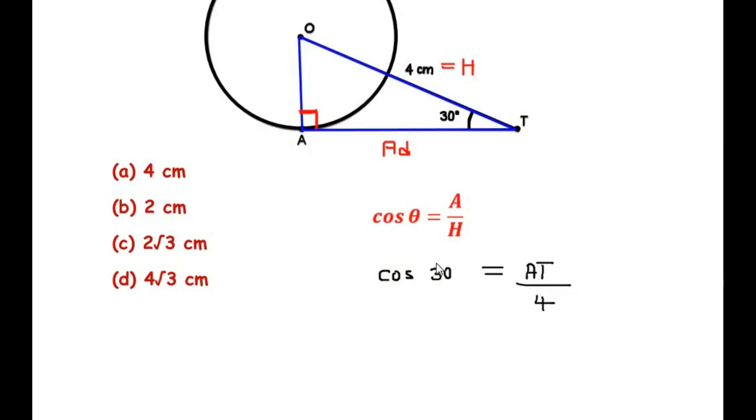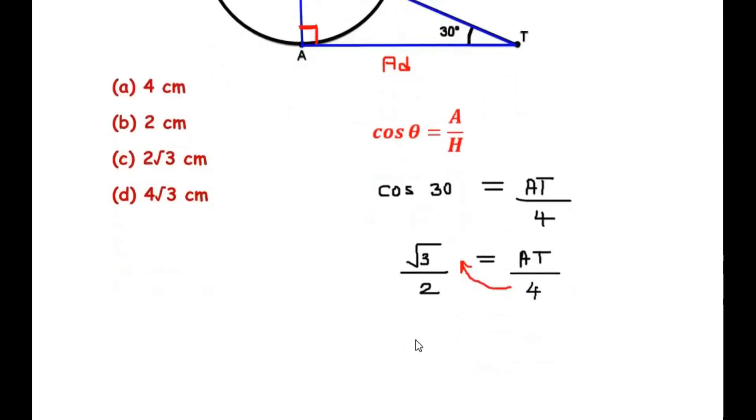Now cos 30 value, we know it is a standard angle. It is going to be root 3 over 2. So cos 30 is root 3 over 2 equals AT over 4. Now cross multiplying, let us take 4 on the other side. So 4 times root 3 over 2 is equal to AT.